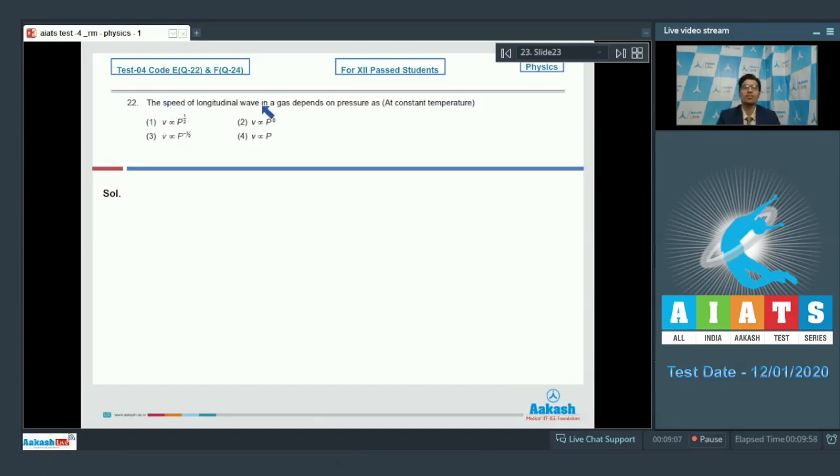Question number 22 says, the speed of longitudinal wave in a gas depends on pressure as at constant temperature. Dear students, if the temperature remains constant, then the speed which is equal to gamma RT by m remains constant and it is independent of pressure, which means that P will be proportional to P to the power 0.